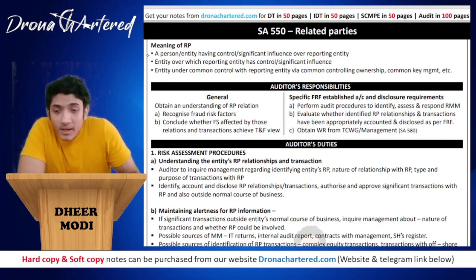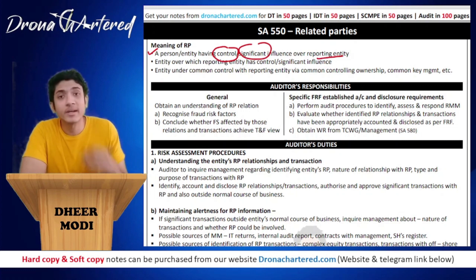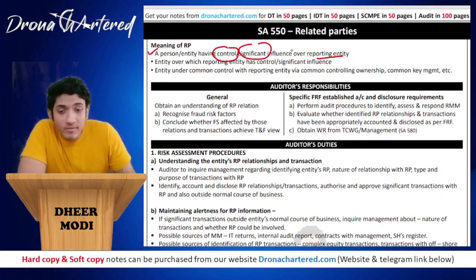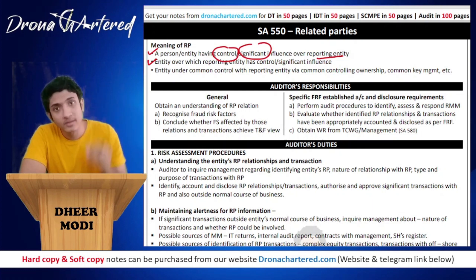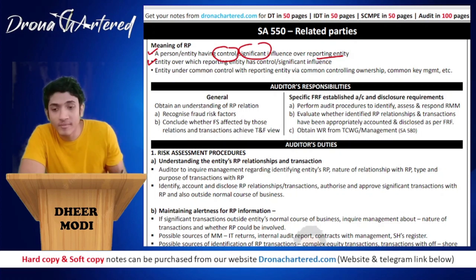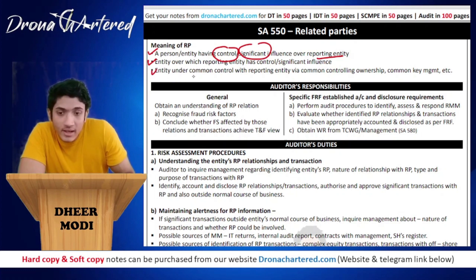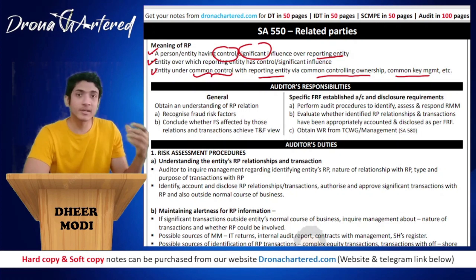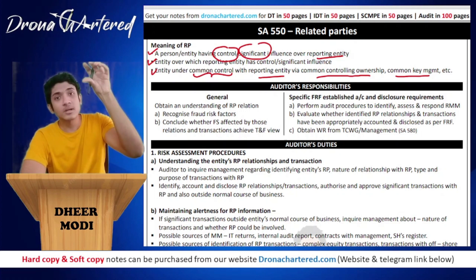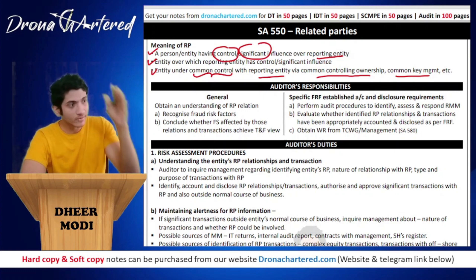A related party is a person or an entity having control or significant influence over the reporting entity — the reporting entity being the one whose audit we are doing. Second is the entity over which the reporting entity has control or significant influence. So either some party controls us, or we control someone else. Third is an entity under common control with the reporting entity via common controlling ownership or common key management. For example, if entity A and entity B are both controlled by a third entity, then both will be related parties to each other.